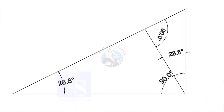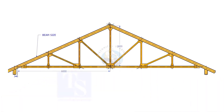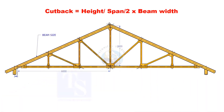Basically the formula is based on the theory that opposite angles are equal. The cutback is truss height divided by half span, multiplied by the actual width of the girder.